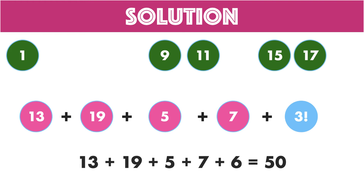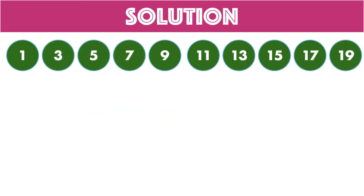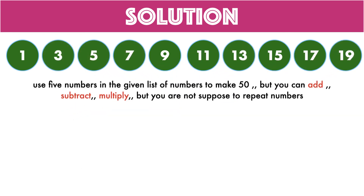Do share your answer in the comment section. Just remember, you can only perform addition with certain mathematical modifications. If the same question is asked with a little modification — use 5 numbers from the given list to make 50, but you can add, subtract, or multiply without repeating numbers — this is pretty simple compared to the previous scenario. By using the multiplication operation, we can have multiple answers.